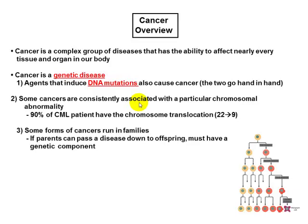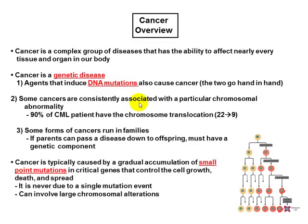Some forms of cancers run in families. Now, it's not that you inherit the cancer, but you inherit the predisposition — the susceptibility — to the cancer. Usually, not one small change like a point mutation is going to cause cancer. You need accumulations of mutations over time in order to develop some type of cancer.